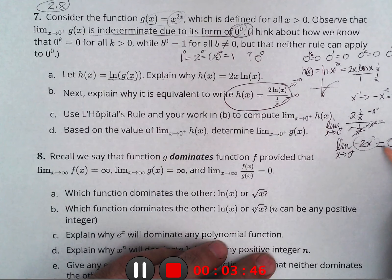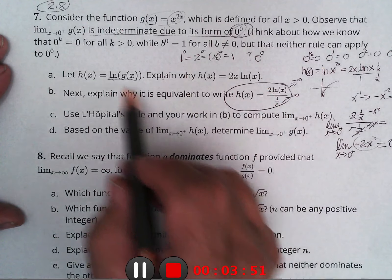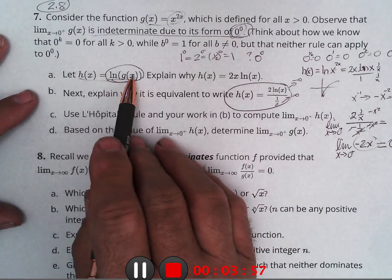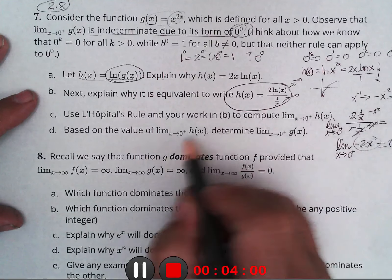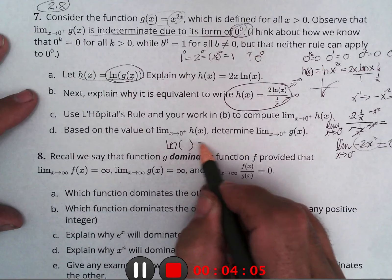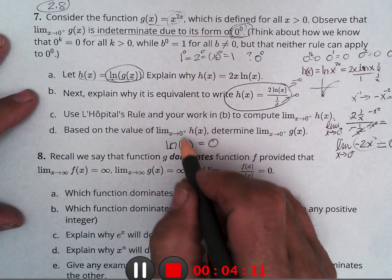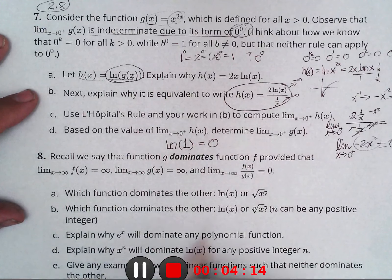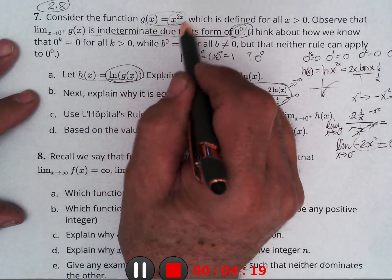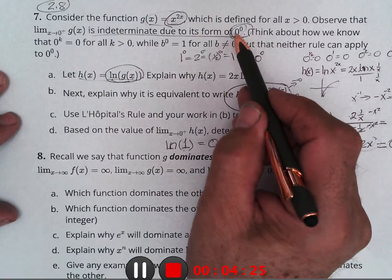We get the limit as x approaches zero from the positive side of negative 2 — from the negative and the 2 — and x squared over x is just x. As x goes to zero, this will go to zero. So h(x) is going to zero. What does g(x) go to? If ln of something is zero, that something must be one. So g(x) has to be one. That's a justification for saying that zero to the zero is one.